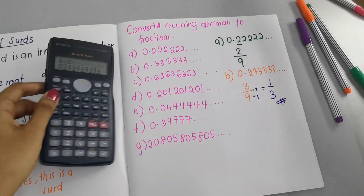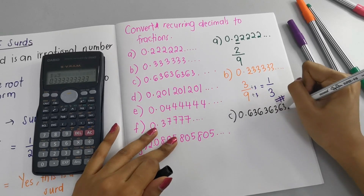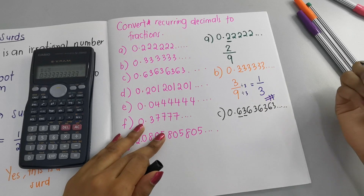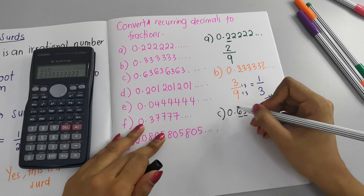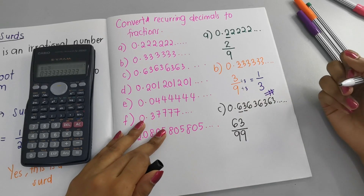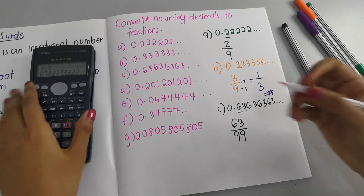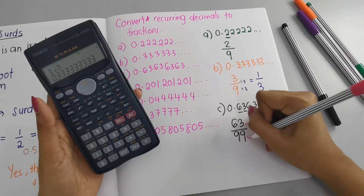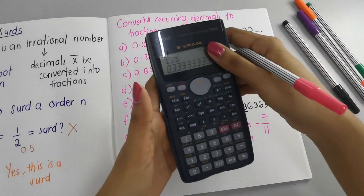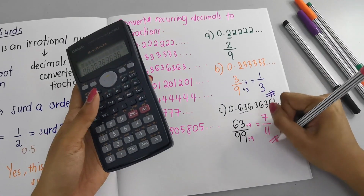For part (c): 0.636363... — it looks like 6 and 3 keep repeating. Since there are two recurring digits, the denominator will be 99. So we write 63/99. Can we simplify? Yes — divide both by 9: 63 ÷ 9 = 7, and 99 ÷ 9 = 11. So the fraction is 7/11. Let's check: 7 ÷ 11 = 0.636363..., correct.